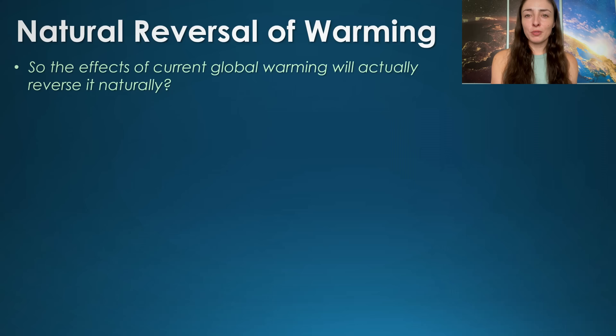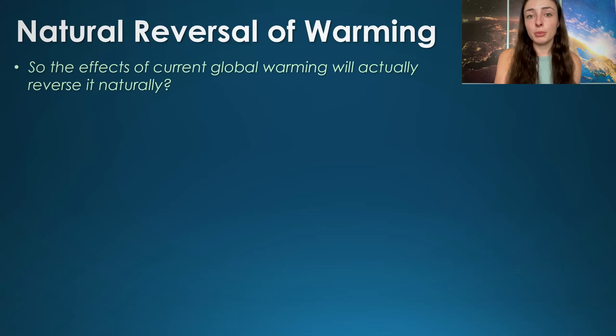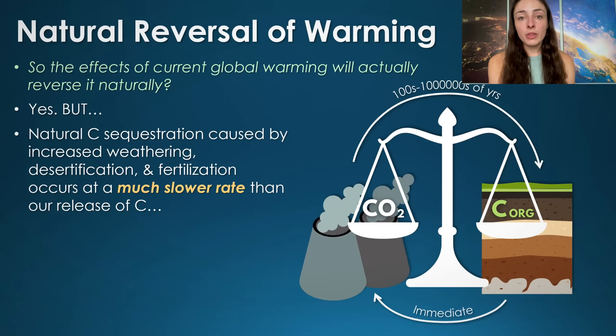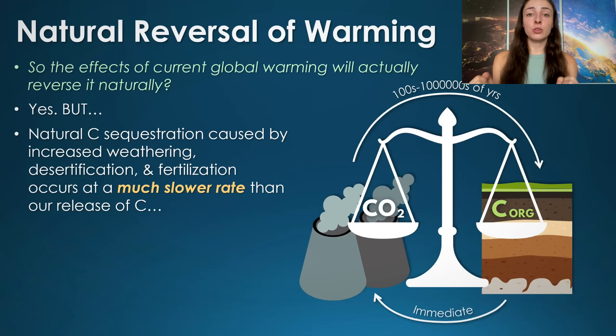Your initial reaction might be: okay, the effects of global warming will actually reverse global warming naturally? Because anytime global warming has occurred in Earth's history — not just human-caused — there has been a subsequent increase in continental weathering rates and thus an increase in carbon burial rates and storage, leading to a period of cooling. The short answer is yes, the effects of global warming will eventually cause it to reverse naturally, but natural carbon sequestration caused by increased weathering, desertification, and fertilization occurs at a much slower rate than our direct and immediate release of carbon upon burning fossil fuels.